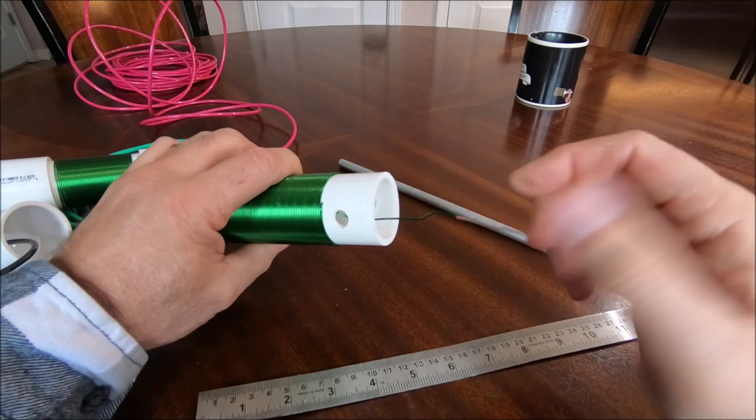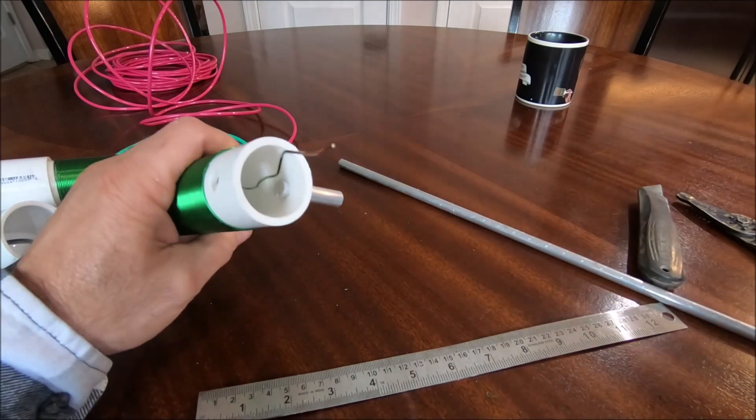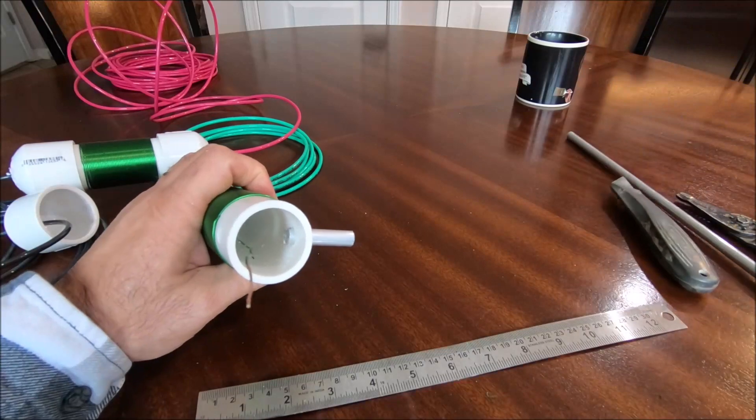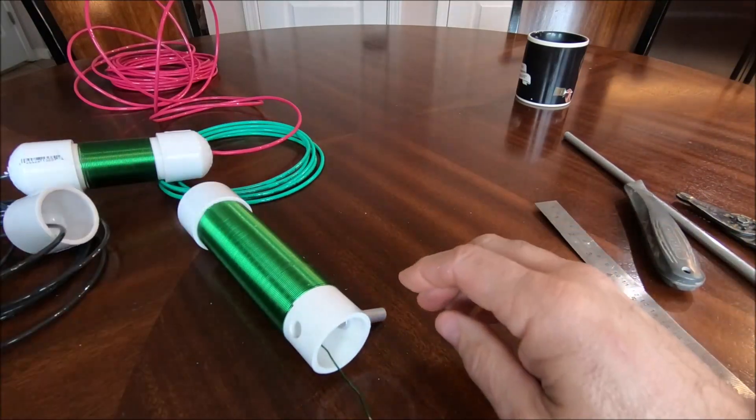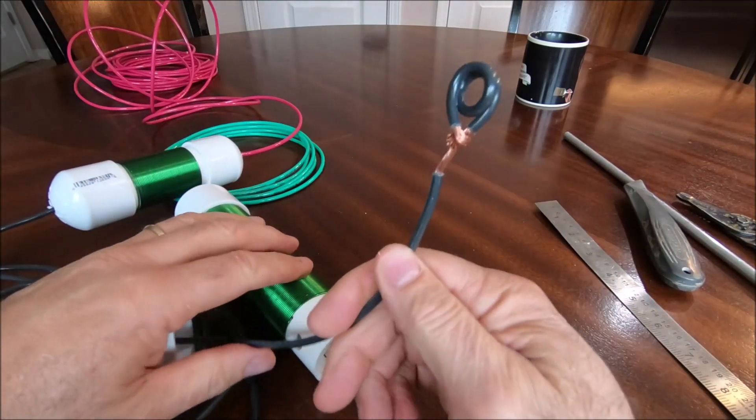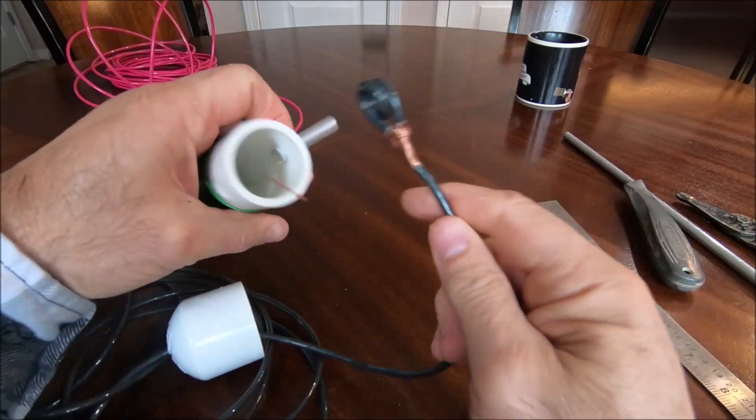I have this stripped. And what I'm going to do now is I've used this rod to pre-wind this connection here. So now what I'll do is I'll just slip this in here.